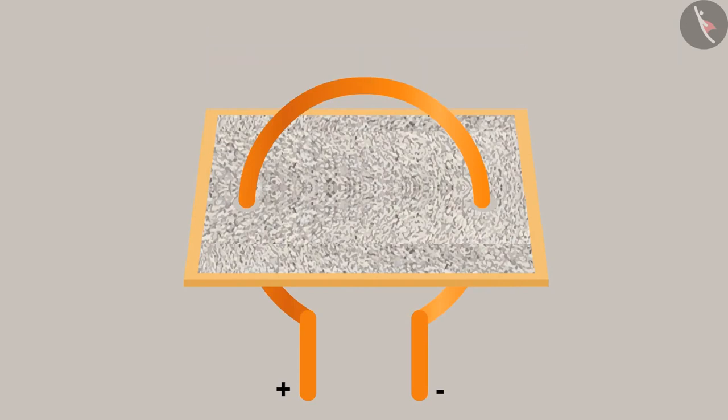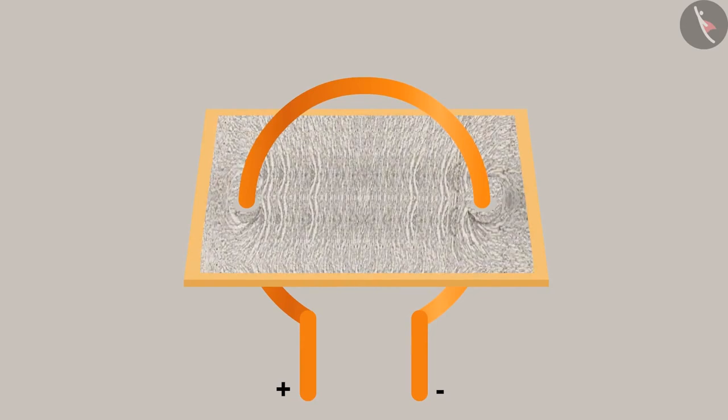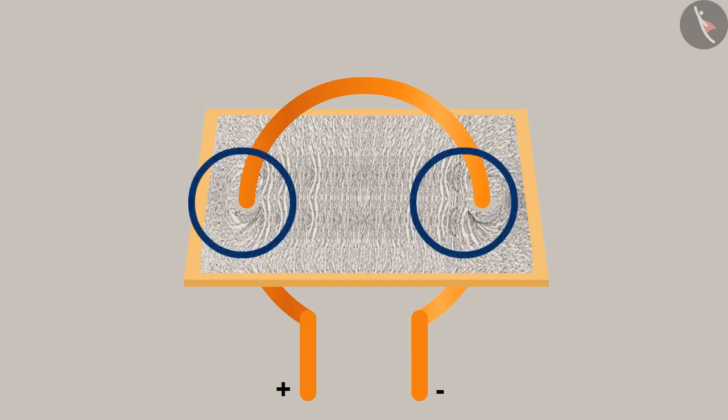When the electric current is passed through the loop, the pattern starts to form here too. The pattern is similar to the former one in some ways and different in others. Yes, fillings are forming circular patterns, but because of the loop, two circular patterns are being formed.